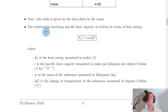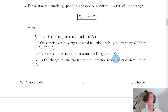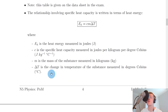Lastly, we have the equation for specific heat capacity. The relationship is written in terms of heat energy, starting with EH on the left-hand side: EH equals c times m times delta T, where EH is heat energy in joules, c is specific heat capacity in joules per kilogram per degree Celsius, m is mass in kilograms, and delta T is the change in temperature in degrees Celsius — not kelvin.